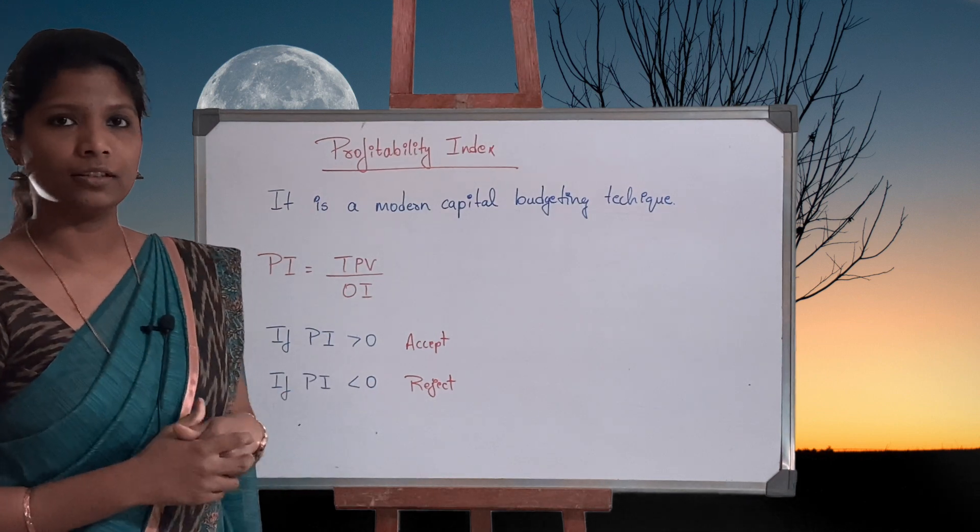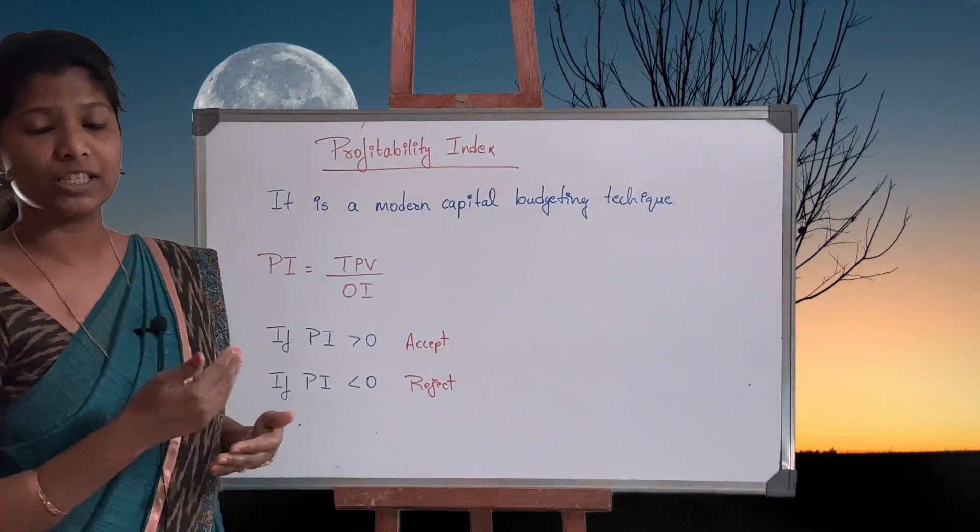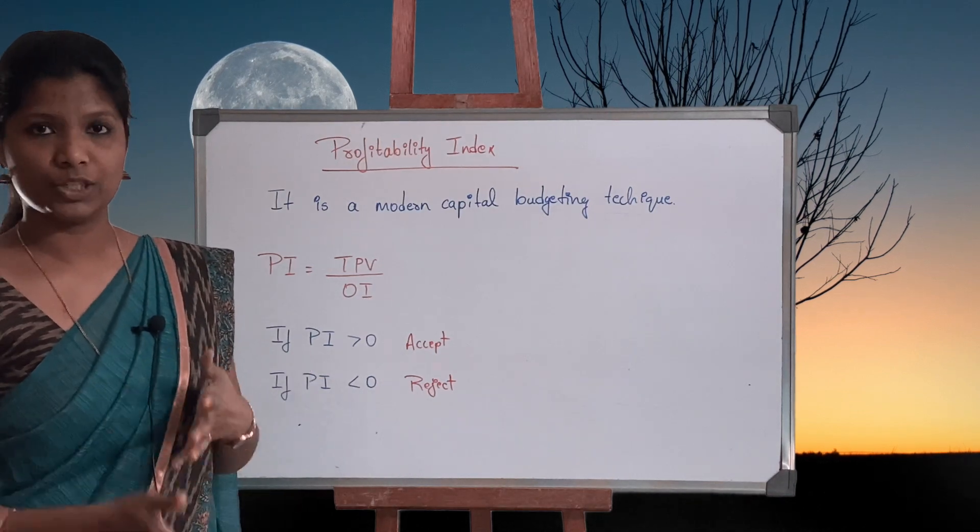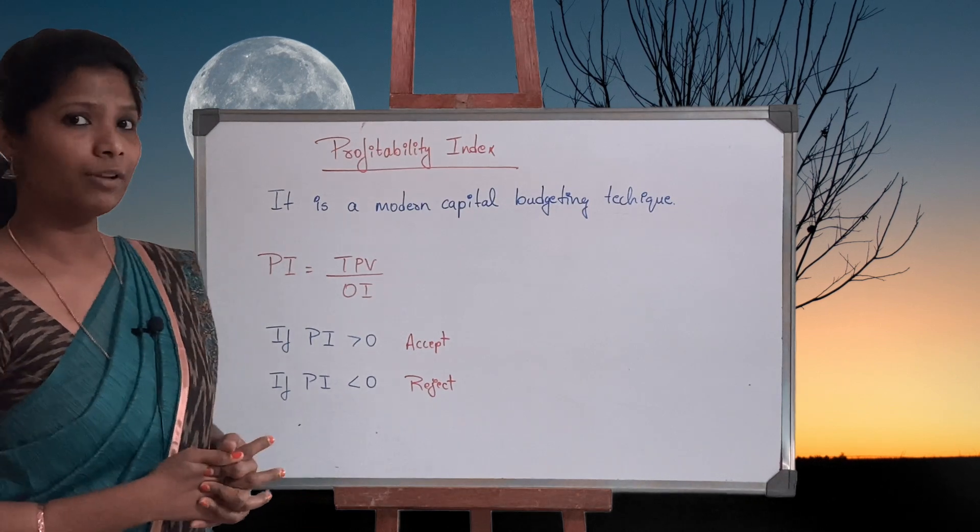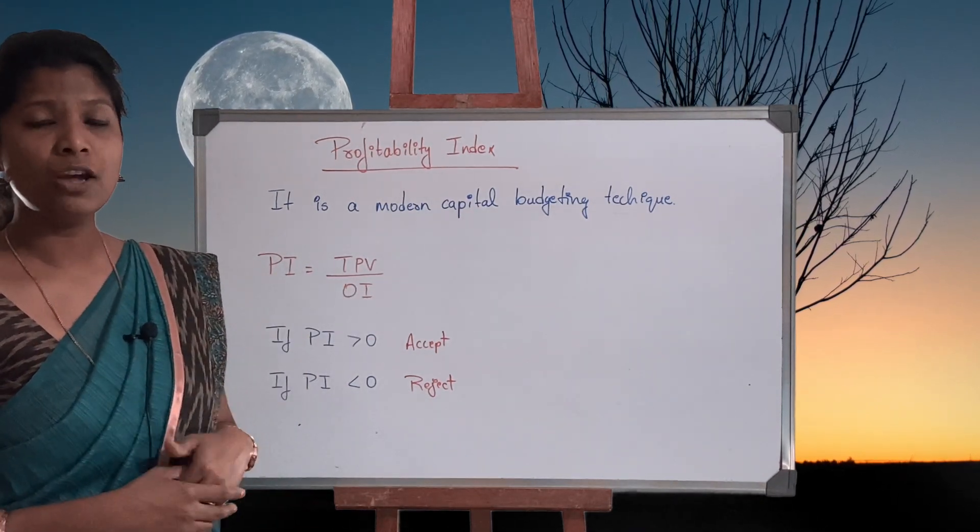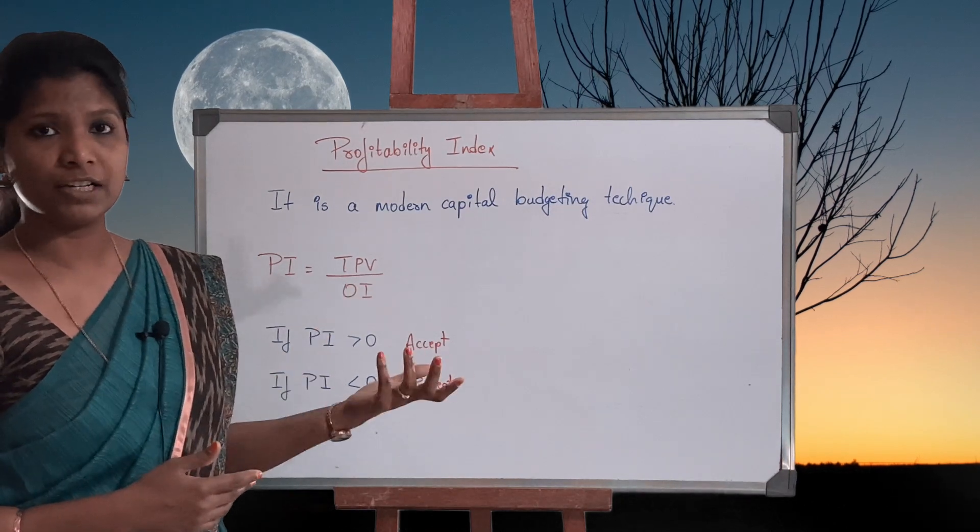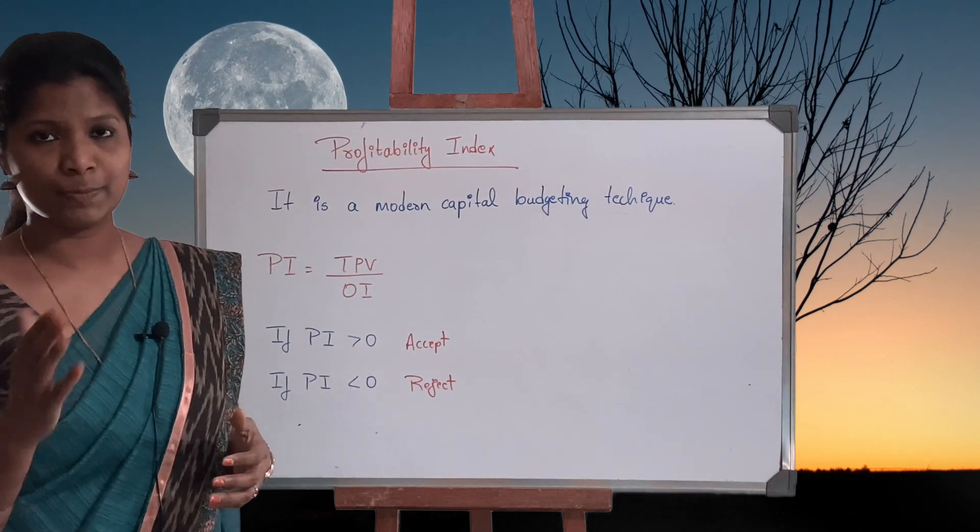The fourth technique under capital budgeting is Profitability Index. It's just the advancement of Net Present Value, so it's called a modern capital budgeting technique. The formula for Profitability Index is total present value divided by original investment. If you observe Net Present Value, what we used to do is total present value minus your original investment. Here we are dividing it, so we get a decimal point.